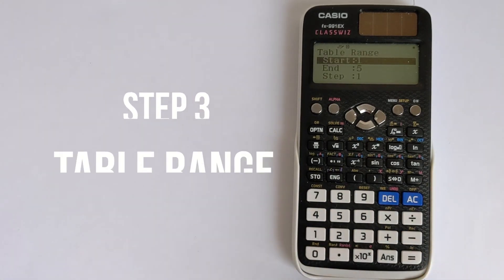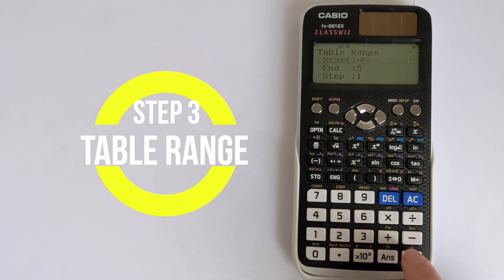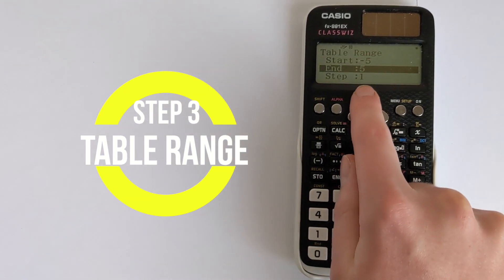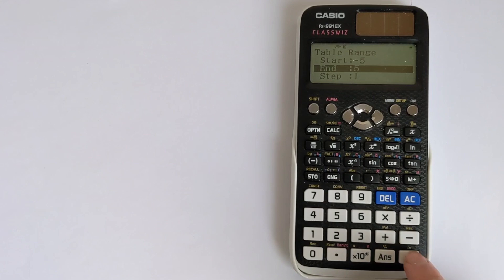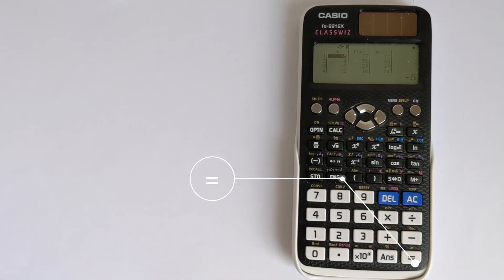Then press equals, it'll ask for the range. So do a wide range, some positive, some negative. So let's go from minus 5 up to 5, and a step of 1. It's got a limit on how many it can do. Then you press equals, and it will start calculating that.